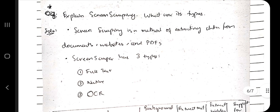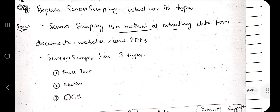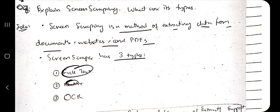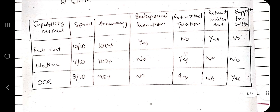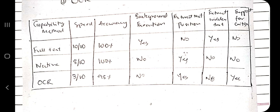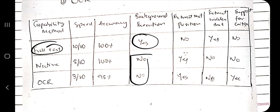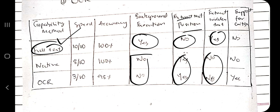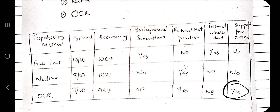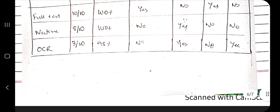Screen Scraping is the method of extracting data from documents, websites, and PDFs. It has three types: Full Text, Native, and OCR. Full Text has the highest speed; Native is second; OCR is third. Accuracy is 100% for Full Text and Native, and 98% for OCR. Background execution is possible only in Full Text. Extract position is supported by Native and OCR but not Full Text. Extracting from hidden windows is only possible in Full Text. Citrix only supports OCR — it does not support Full Text or Native.